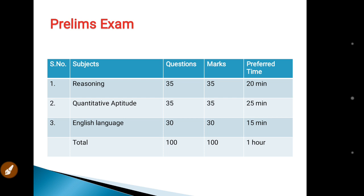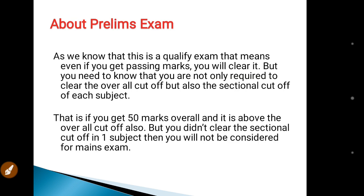On average, in reasoning you should attempt 25 to 30 questions. In quantitative aptitude, attempt around 20 to 25 questions. In English language also, attempt 20 to 25 questions. Overall, 65 to 80 questions is a good attempt in the prelims exam.